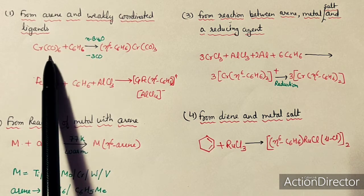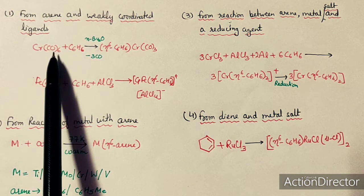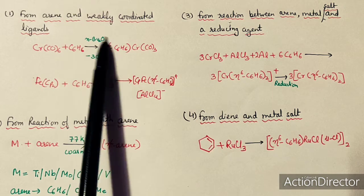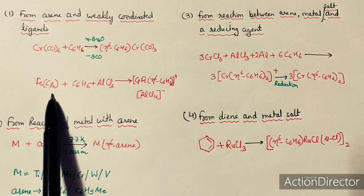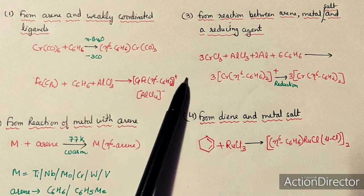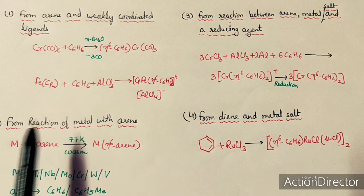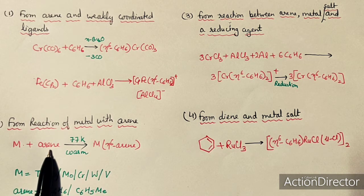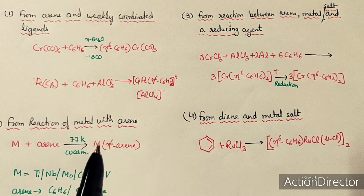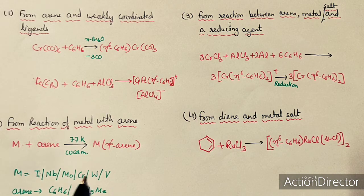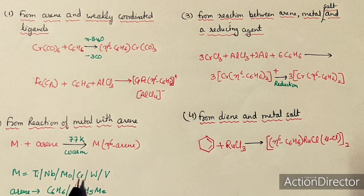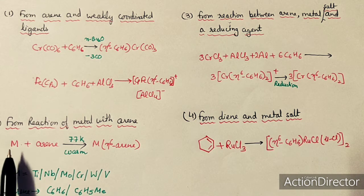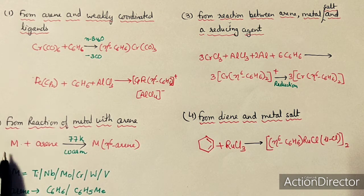Arene replaces three carbonyls in the presence of ether. Cyclopentadienyl can also react with arene and AlCl3 to form eta-6 arene complexes. Another method involves direct reaction of metal with arene at higher temperatures to form metal eta-6 arene complexes. Metals used include titanium, niobium, molybdenum, chromium, tungsten, and vanadium, and arene may be C6H6 or C6H5Me. The metal is in its reduced form for this direct reaction.